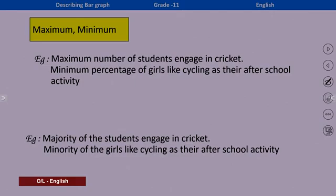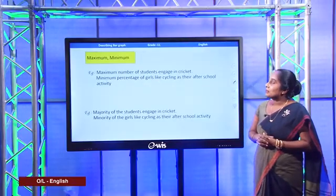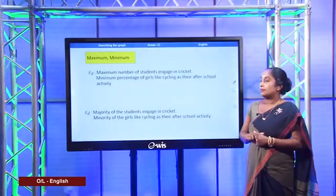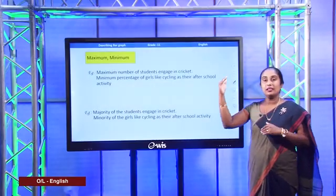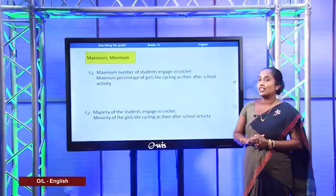Next we have 'maximum' and 'minimum'. Maximum means a lot — for example: 'Maximum number of students engage in cricket.' Minimum means a few — for example: 'Minimum percentage of girls like cycling as their after-school activity.'